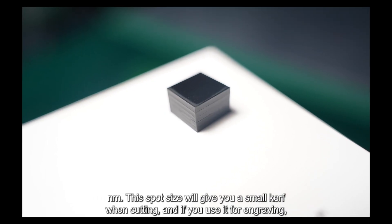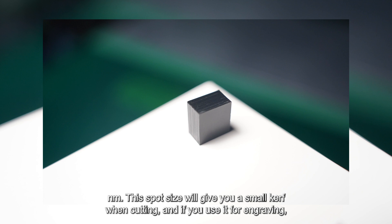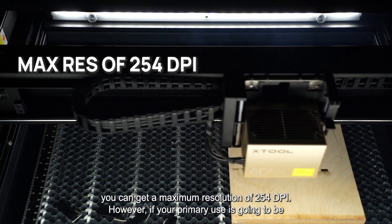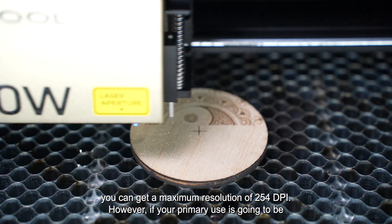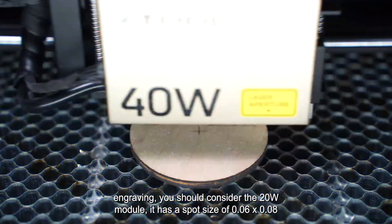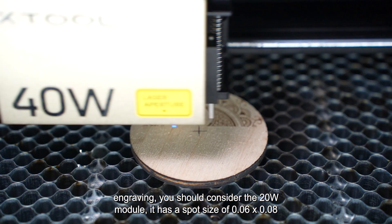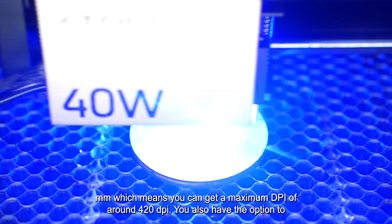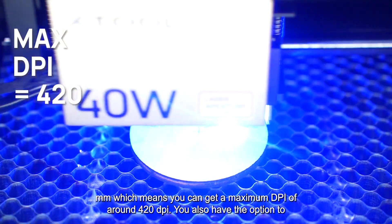This spot size will give you a small kerf when cutting. And if you're using it for engraving, you can get a maximum resolution of 254 dpi. However, if your primary use is going to be engraving, you should consider the 20 watt module. It has a spot size of 0.06 by 0.08 millimeter, which means you can get a maximum dpi of around 420.